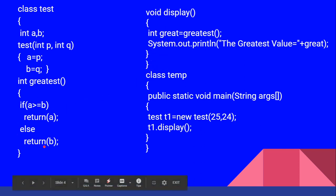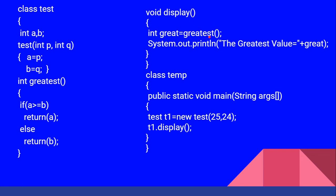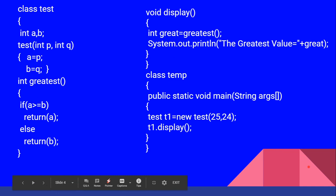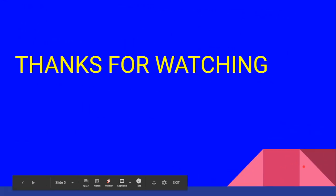The value 25 is the greatest value stored in the variable great. The greatest method returns 25, so great equals 25. The main focus here is that within the display function, the greatest function is called, and greatest is within the same class test. That is the concept of nesting of methods. Hope it is easy to follow this example, and thanks for watching.